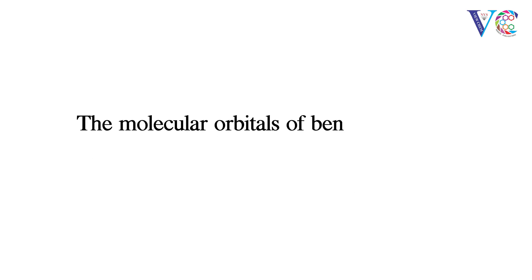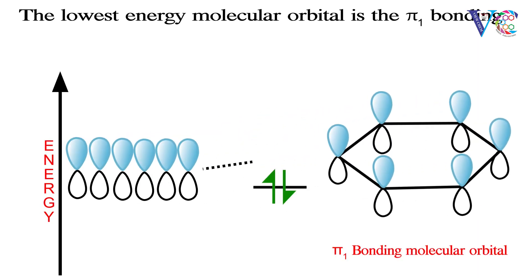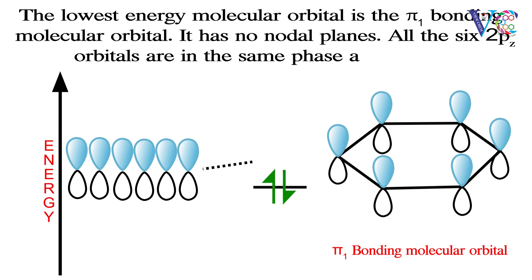The molecular orbitals of benzene can be visualized in this manner. The lowest energy molecular orbital is the pi 1 bonding molecular orbital. It has no nodal planes. All the six two-pz orbitals are in the same phase and overlap.